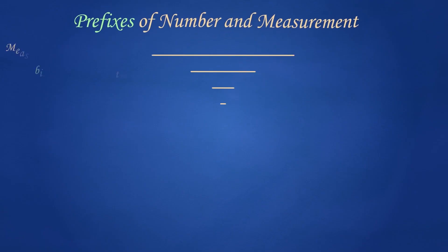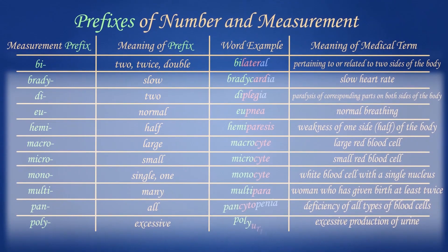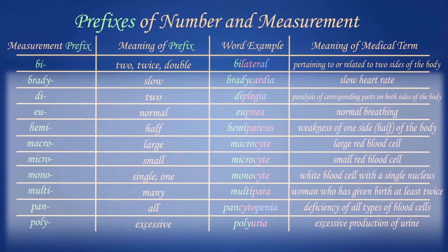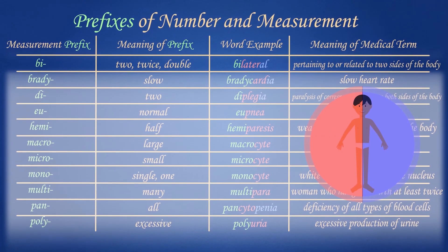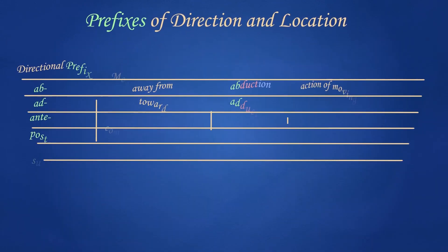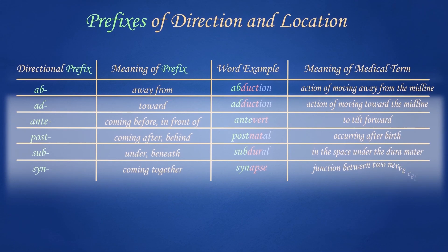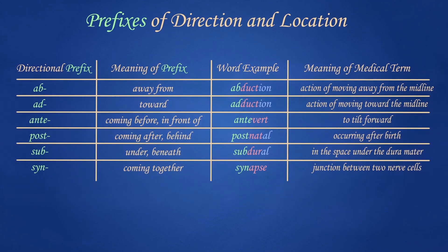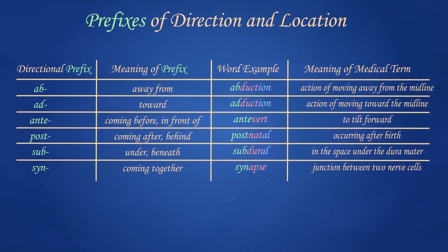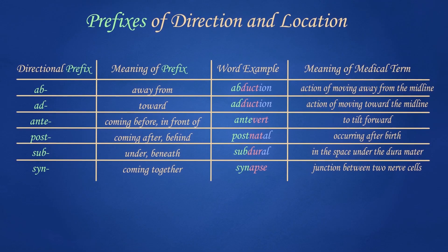An example of prefixes of number and measurement is the prefix 'bi-', which means 'two, twice, or double', as in the term 'bilateral', which means 'pertaining to or related to two sides of the body'. An example of prefixes of direction and location is the prefix 'ab-', which means 'away from', as in the term 'abduction', which means 'the action of moving away from the midline'. There are other classes of prefixes, but like the other word parts you have studied, they will appear and reappear during your study.